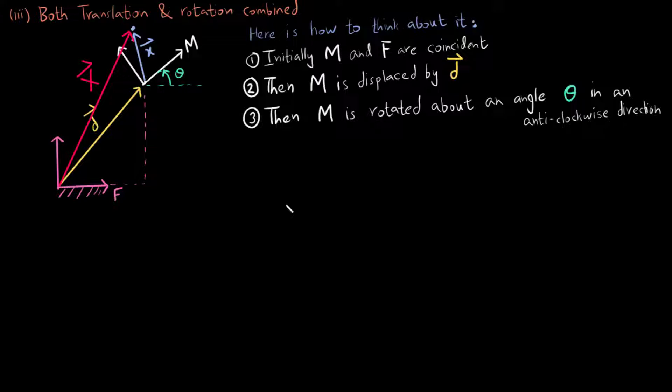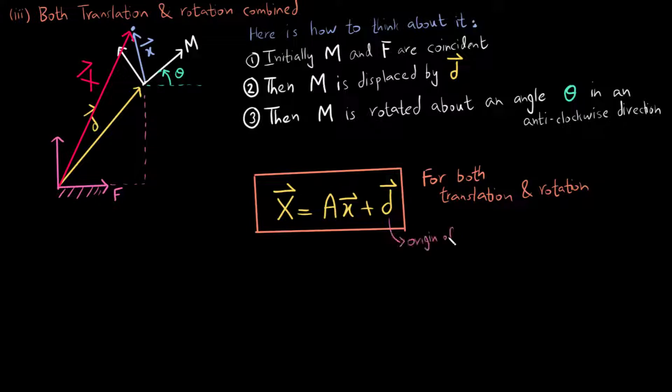We can do so by using the formula big X equals the rotation matrix times small x plus d, where d is the origin of the moving frame expressed in the fixed frame.